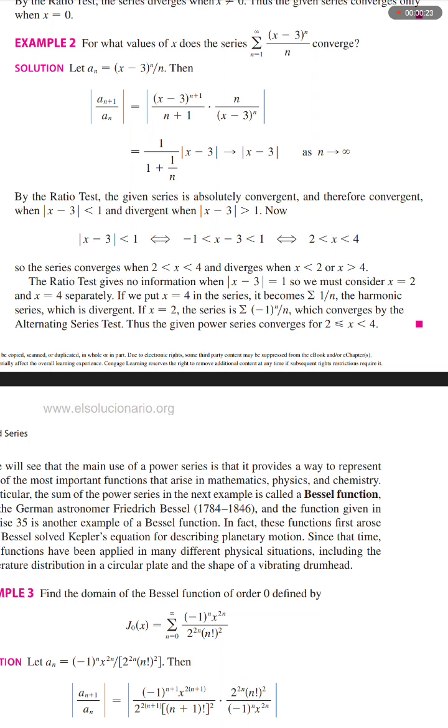Solution: Let a_n = (x-3)^n/n. Then |a_{n+1}/a_n| = |(x-3)^{n+1}/(n+1) · n/(x-3)^n| = 1/(1+1/n) times |x-3|.